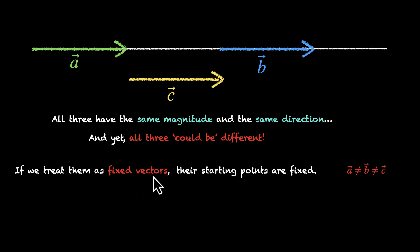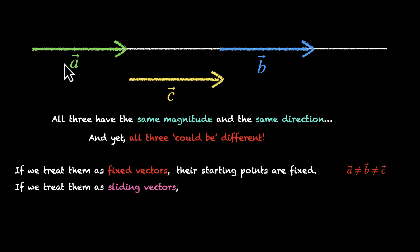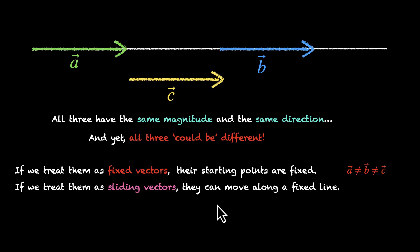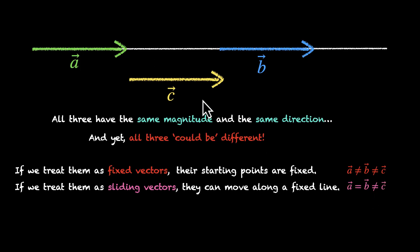But there's another class. If we treat them as sliding vectors, as the name suggests, you can slide these vectors along the line. So this makes A vector and B vector equal. If we're treating them as sliding vectors, they can move along a fixed line, which means you can move A vector on top of B vector. This makes A and B equal, but C is still not equal — C is along a different line.